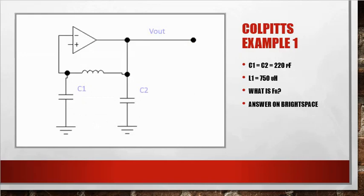Colpitts example 1. C1 equals C2 equals 220 picofarad. L1 equals 750 microhenry. What is the frequency of resonance? The answer is on Brightspace for you to check. Colpitts example 2. C1 equals C2 equals 910 picofarad. L1 is 51 microhenry. What is FR? Answer is on Brightspace.